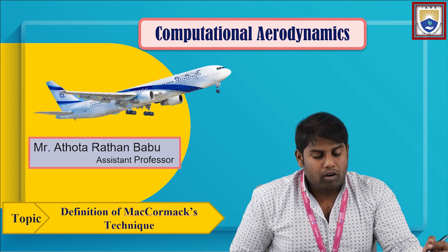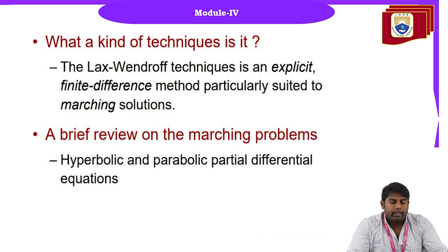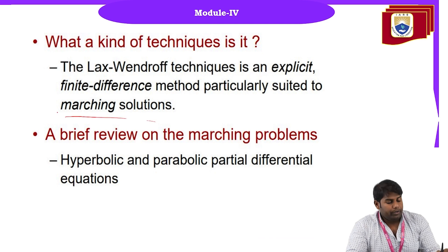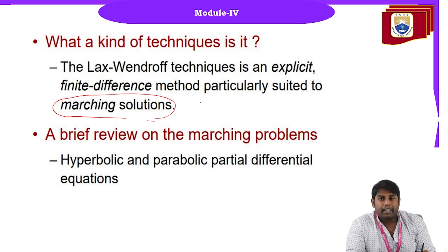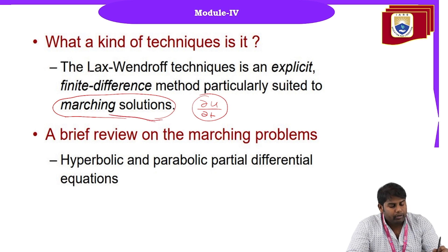For McCormack's technique, first we have the Lax-Wendroff technique, which is an explicit finite difference method as seen in the previous module. The explicit technique is straightforward and simple compared to the implicit method — the number of unknowns is less for the explicit method, whereas for the implicit method the number of unknowns is much greater. This is a marching solution, meaning it varies with respect to time — for example, ∂u/∂t is the variation of velocity with respect to time.